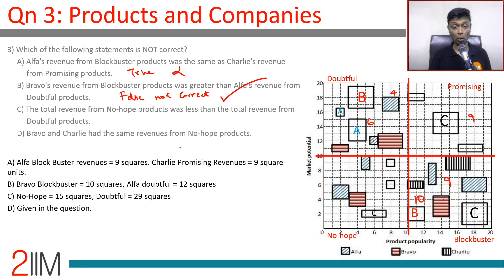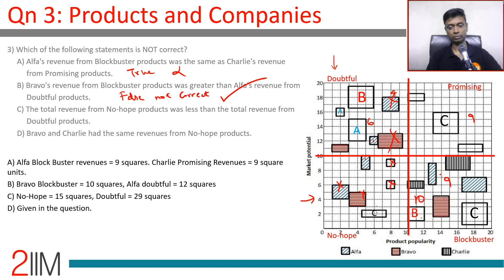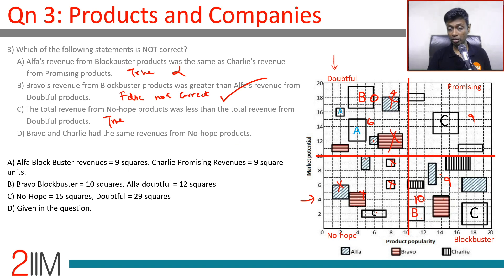Verifying the remaining statements: Statement C — total revenues from No Hope was less than from Doubtful. Doubtful is clearly a larger portion of the grid, and after cancelling the matching four-unit values, No Hope has a remainder of about five units versus Doubtful's nine — so No Hope is indeed less than Doubtful; this is true. Statement D — Bravo and Charlie had the same revenues from No Hope products. This was given in the question and confirmed: both account for four units. This is also true. So the answer is Choice B.